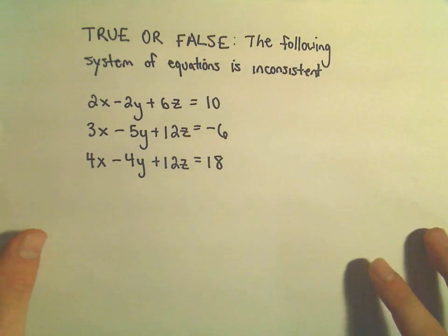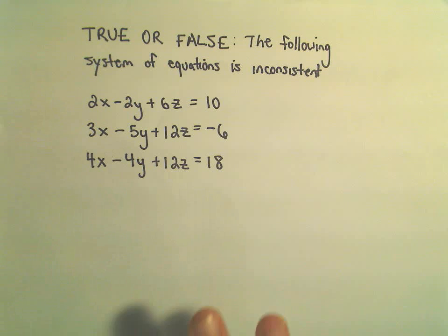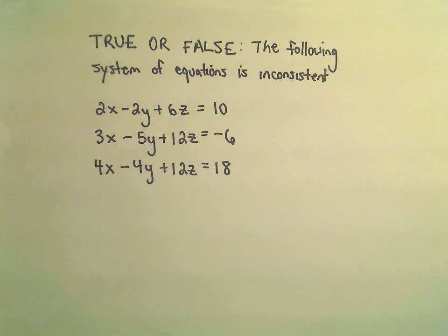So, true or false, the following system of equations is inconsistent. We've got 2x minus 2y plus 6z equals 10, 3x minus 5y plus 12z equals negative 6, 4x minus 4y plus 12z equals 18.